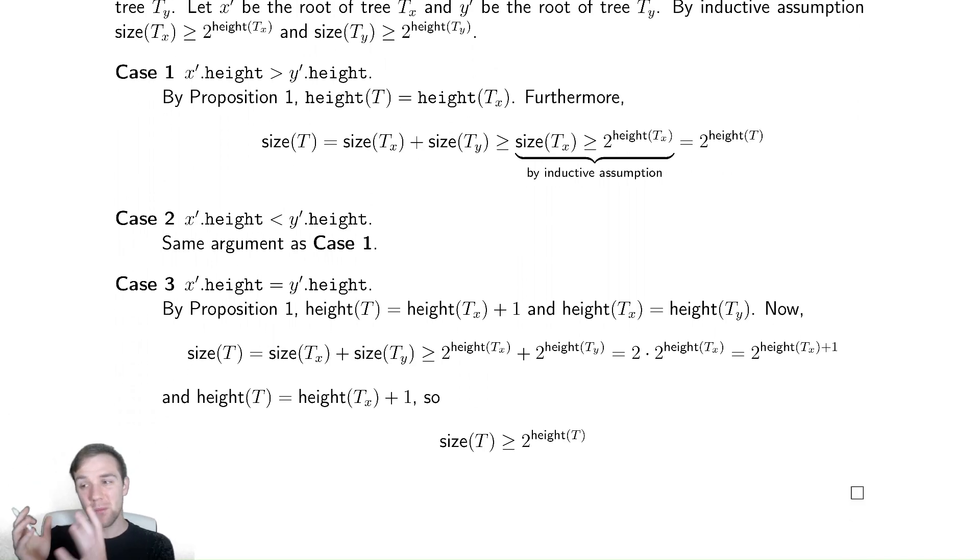Case two exactly the same. Case three a bit more work, but not much. We know by proposition one again that we can claim that the heights are correct in this manner. And by assumption here again from proposition one, we have that the heights of the two trees tx and ty are the same.